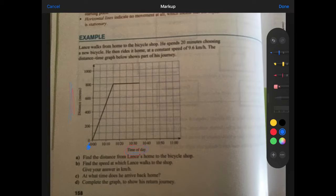So here's my example. They tell me that Lance walks from home to the bicycle shop. He spends 20 minutes choosing a new bicycle. He then rides home at a constant speed of 9.6 kilometers an hour. The distance time graph below shows part of the journey. Right. So what now? Let's erase all the stuff that we don't need.